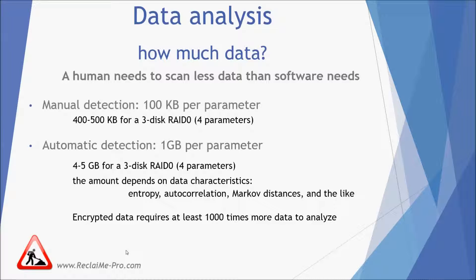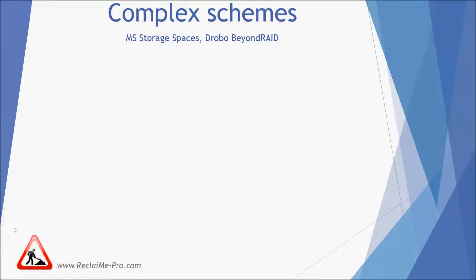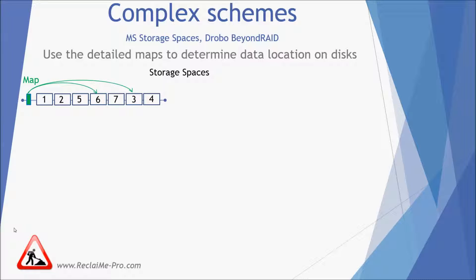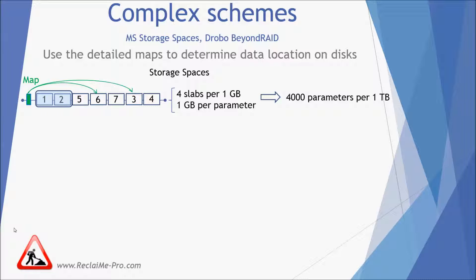In automatic recovery, the minimum amount of data to scan is about 1 GB per parameter. More complex schemes of storing data, like Microsoft Storage Spaces and Drobo Beyond RAID, use detailed maps to determine data location on member disks. In the simplest case, you can think of Storage Spaces as a datastore consisting of 256 MB elements called slabs. There is a map storing pointers to the slabs. If you have only one disk in a Storage Spaces pool, to describe 1 TB of data you need up to 4000 parameters describing the location of each element on the disk. In real life, slabs are grouped into series; nevertheless, the number of parameters to be determined is still measured in hundreds per TB.